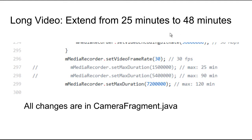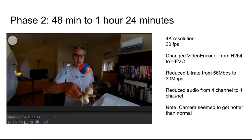Really, with just one or two lines of code, you can unlock features of the camera that nobody else has. Everybody else in the world has a THETA and it can only record for 25 minutes at a shot, but if you modify one or two lines of code, you can extend it out to 48 minutes.